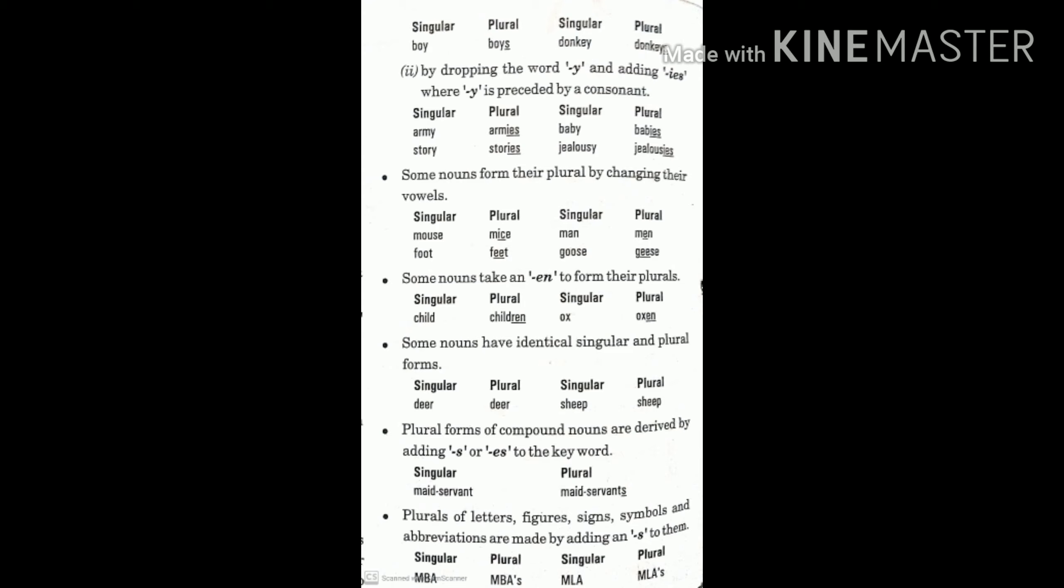Some nouns form their plural by changing vowels. Like mouse, mice, foot, feet. Some nouns take an e-n to form their plurals. Like child, children, ox, oxen.